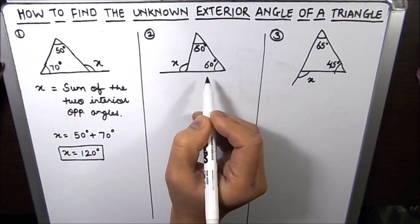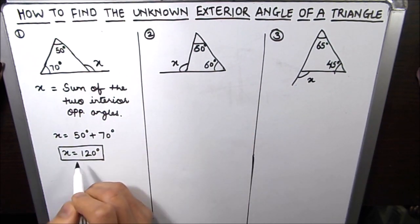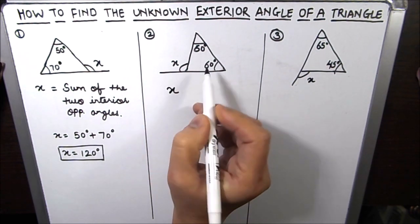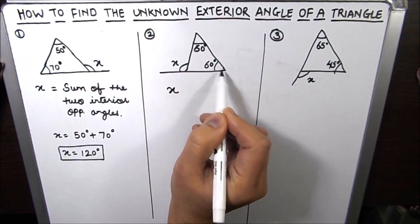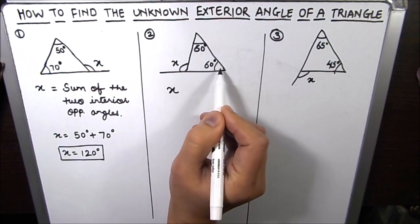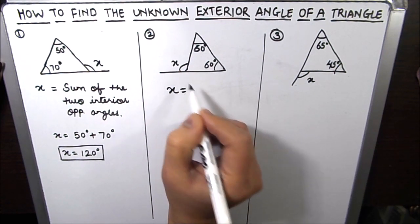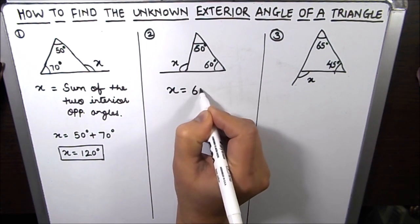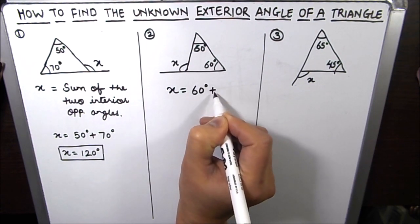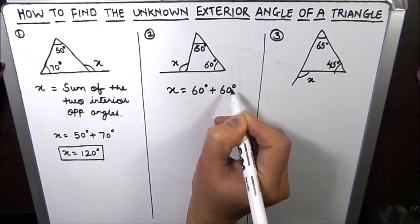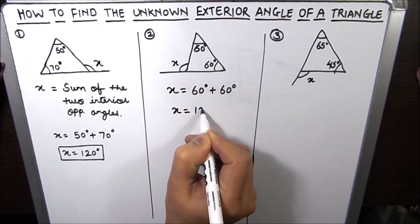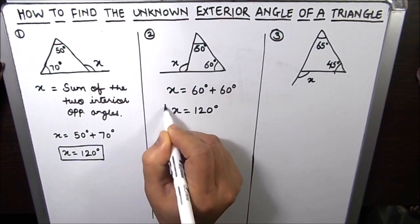The next one — the same theorem will apply here too. The interior opposite angles are given as 60 degrees and 60 degrees. So x will be equal to 60 plus 60, which gives x equal to 120 degrees.